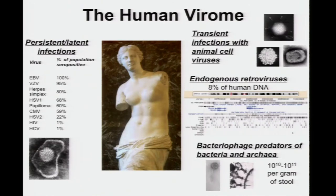The human virome is similarly gigantic. Perhaps most familiar will be the persistent latent infections that are extremely common — herpes viruses, for example, and papillomavirus. Many of the herpes viruses infect almost all of the people in the U.S. population. Papilloma is also very common. HIV and HCV affect something like 1% of the population.